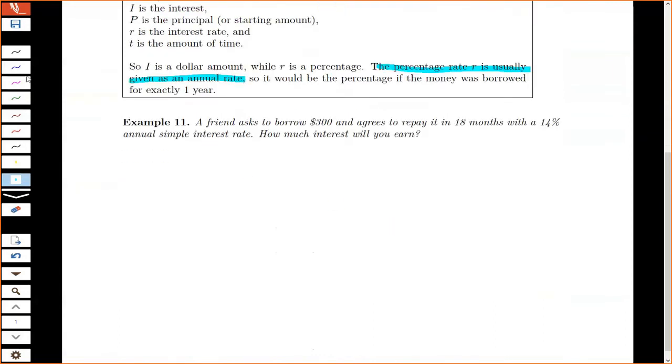So let's look at an example. Let's suppose a friend asks to borrow $300 and agrees to repay it in 18 months with 14% simple interest, where that's an annual rate. So what I do is I go to my problem and I identify what numbers I was given. Borrowing $300 is the principal P. The 18 months is the amount of time T.